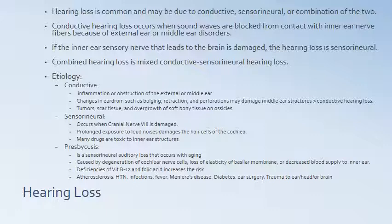Presbycusis is a sensorineural auditory loss that occurs with aging. It is caused by degeneration of cochlear nerve cells, loss of elasticity of the basal membrane, or decreased blood supply to the inner ear. Deficiencies of vitamin B12 and folic acid increase the risk. Other causes in the elderly include atherosclerosis, hypertension, infections, fever, Meniere's disease, diabetes, ear surgery, and trauma to the ear, head, or brain.